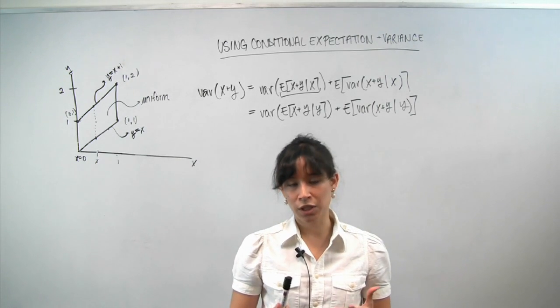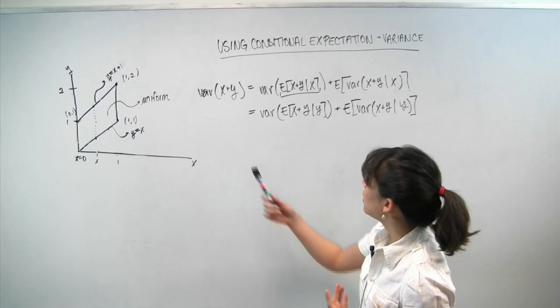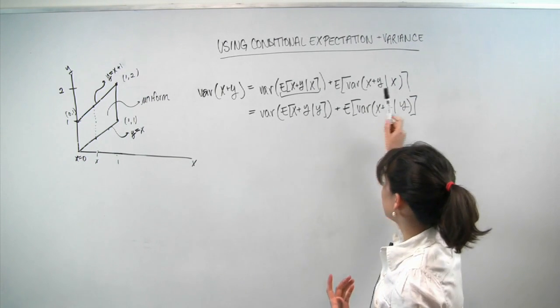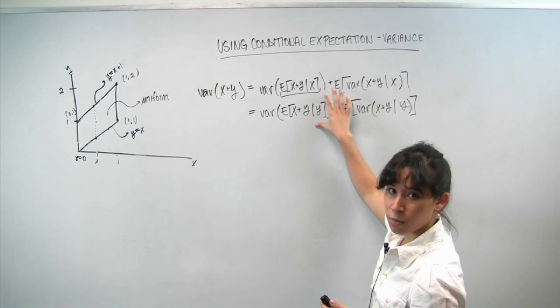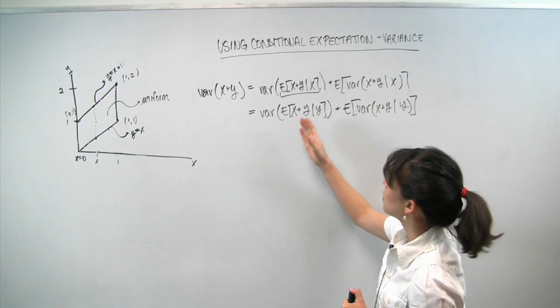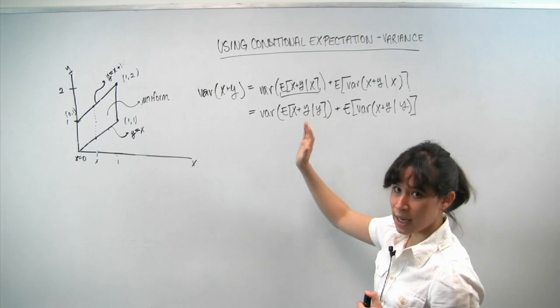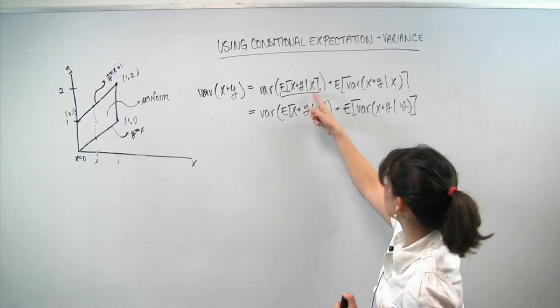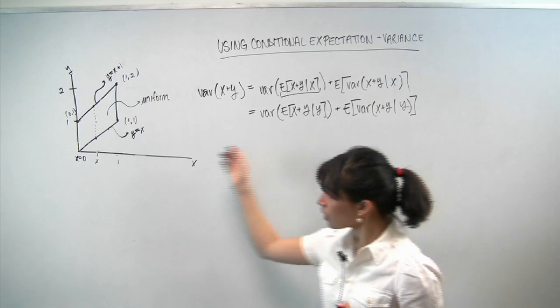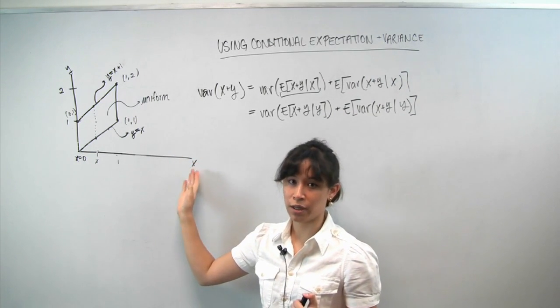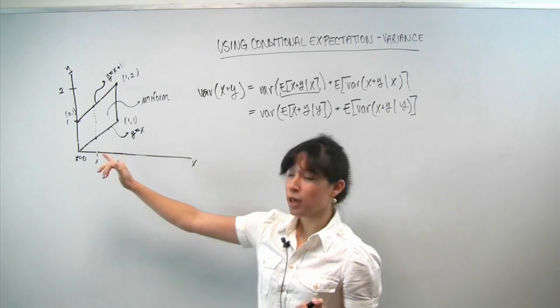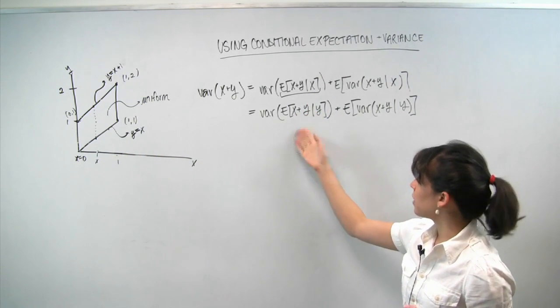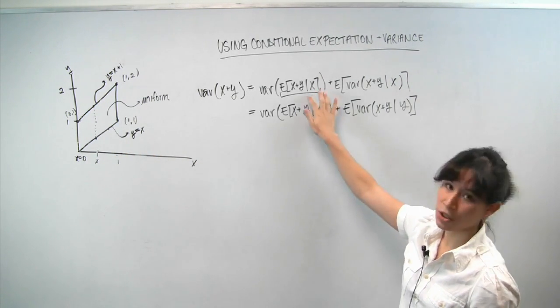So from lecture, you should recall that the law of total variance can be written in these two ways. And the reason why there's two different forms for this case is because the formula always has you conditioning on something. Here we condition on x. Here we condition on y. And for this problem, the logical choice you have for what to condition on is x or y. So again, we have this option. And my claim is that we should condition on x.